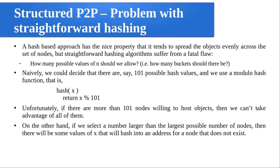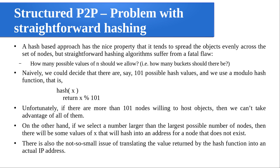There will be some values of X that will hash into an address for a node that does not exist. There is also the not-so-small issue of translating the value returned by the hash function into an actual IP address — what value does the hash function give you, and you have to convert that into an IP address, which is an additional effort. Similarly, when searching, you take the hash value and again there is one more step of converting that hash value into an IP address, adding additional overhead.